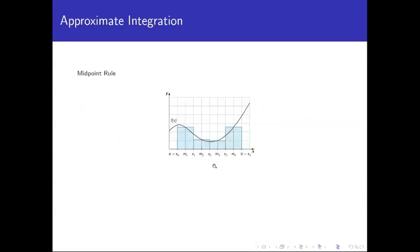Here's a graphic illustrating how the midpoint rule works. We've got a function f of x and we want to calculate the definite integral from a to b. In this case there are four sub-intervals. With the midpoint rule, instead of using the left or right endpoint of each sub-interval, we choose the midpoint. So m₁ is halfway between x₀ and x₁, m₂ is halfway between x₁ and x₂, and so on.